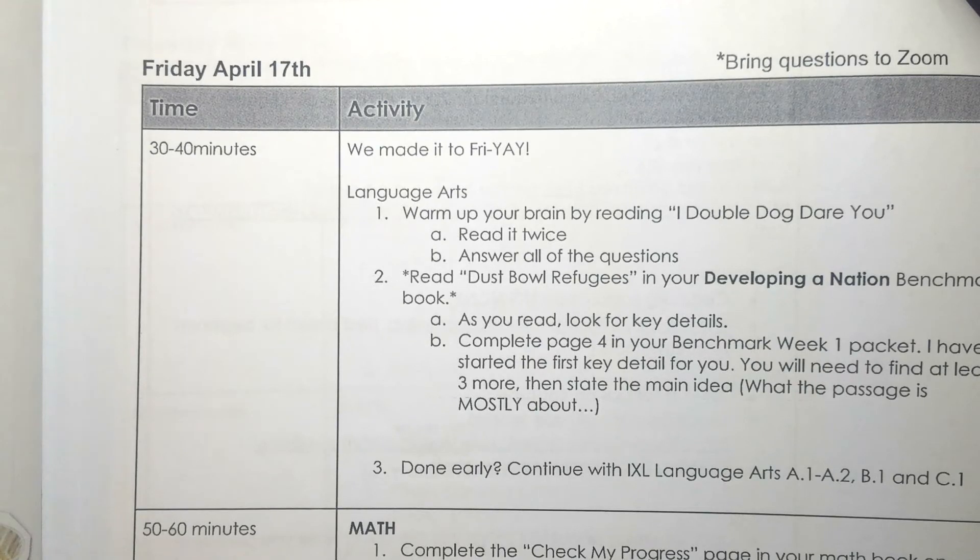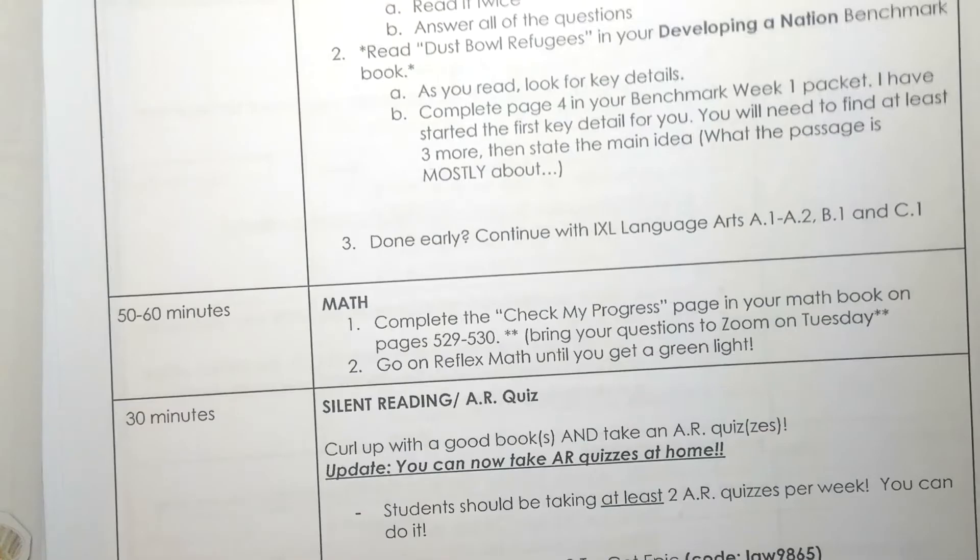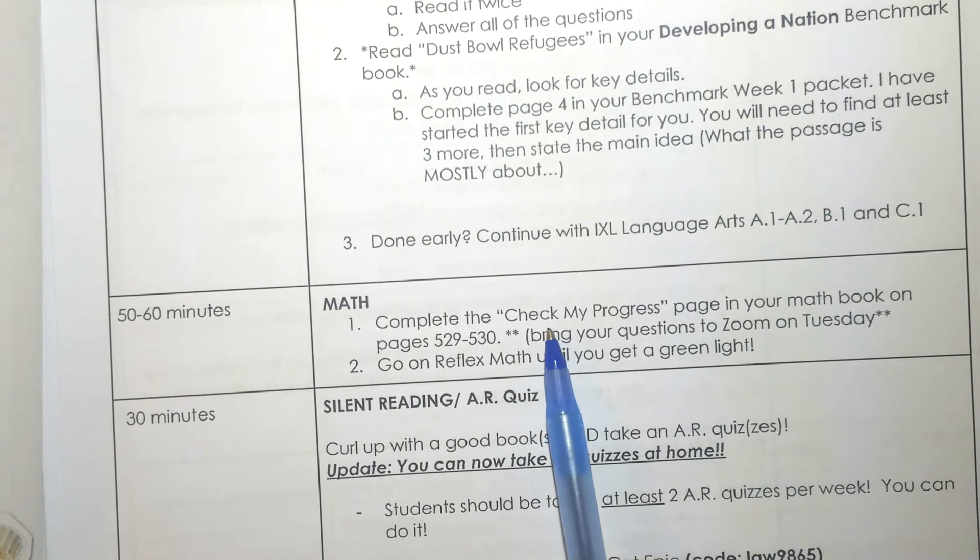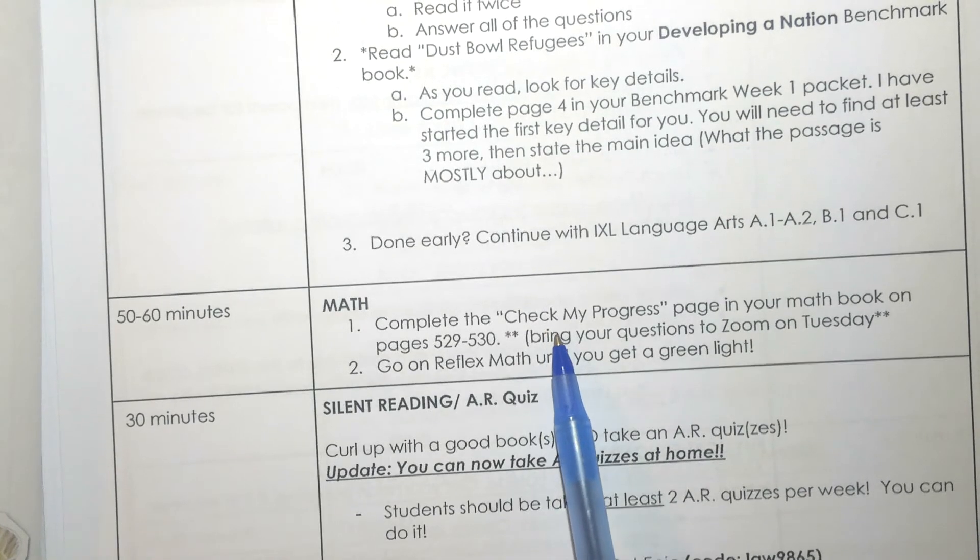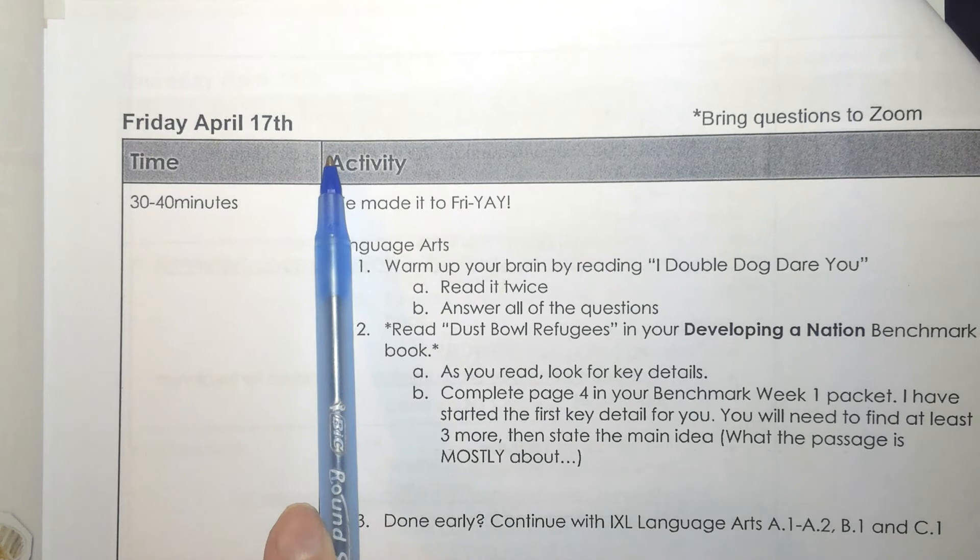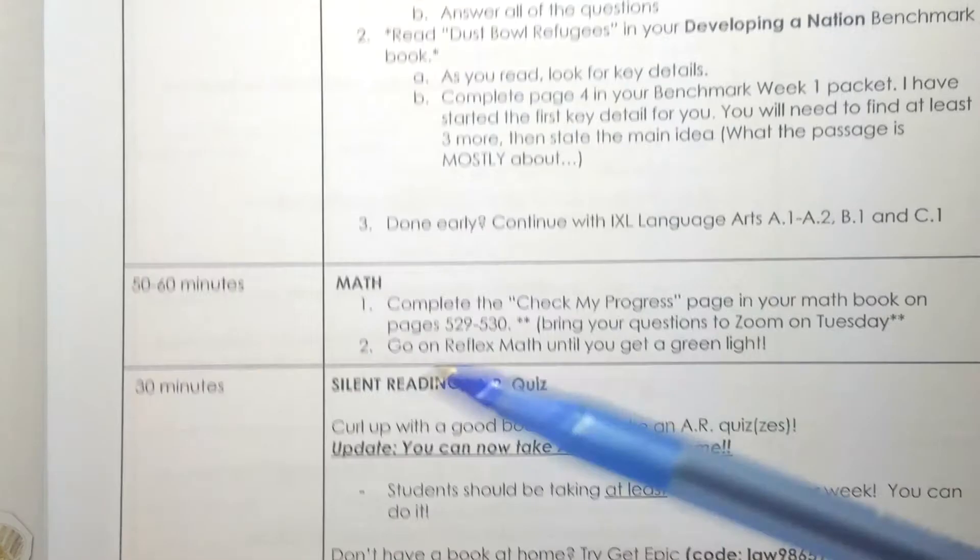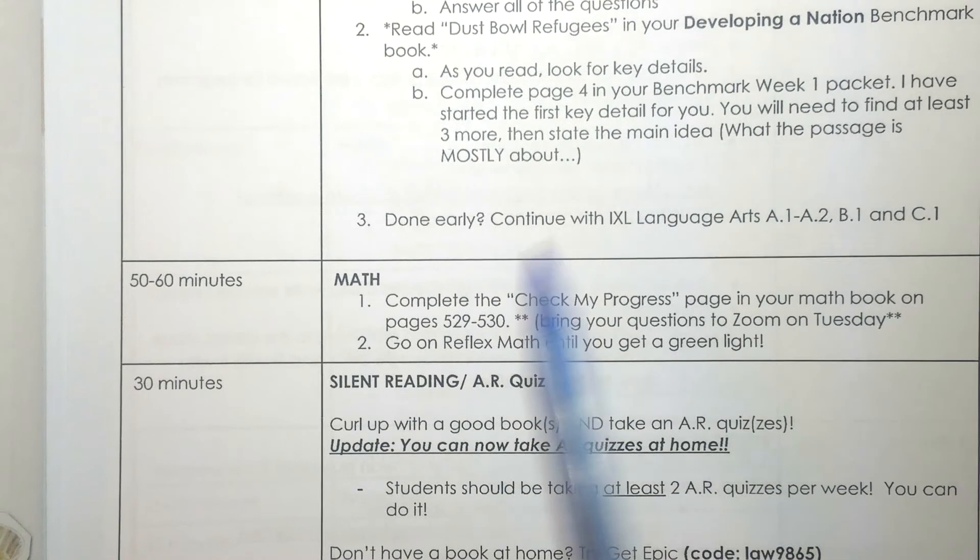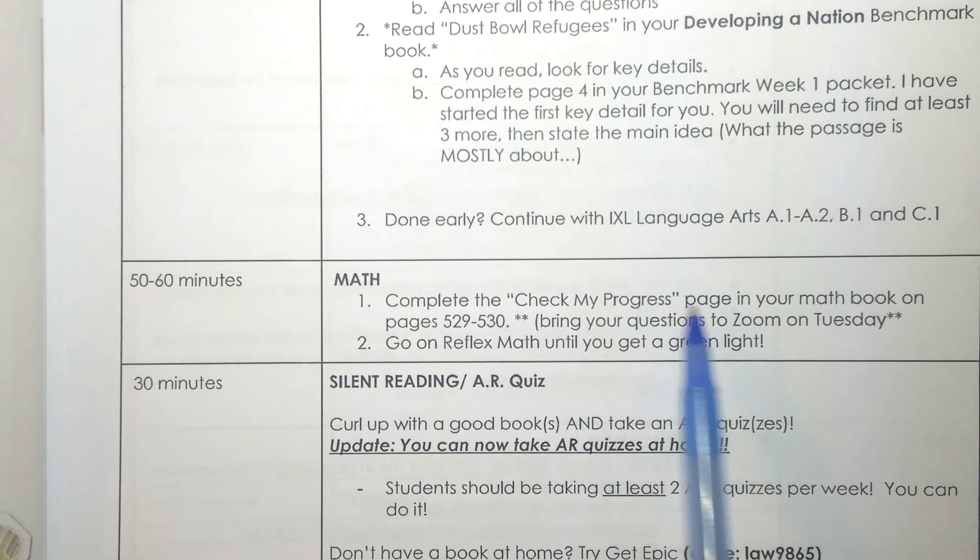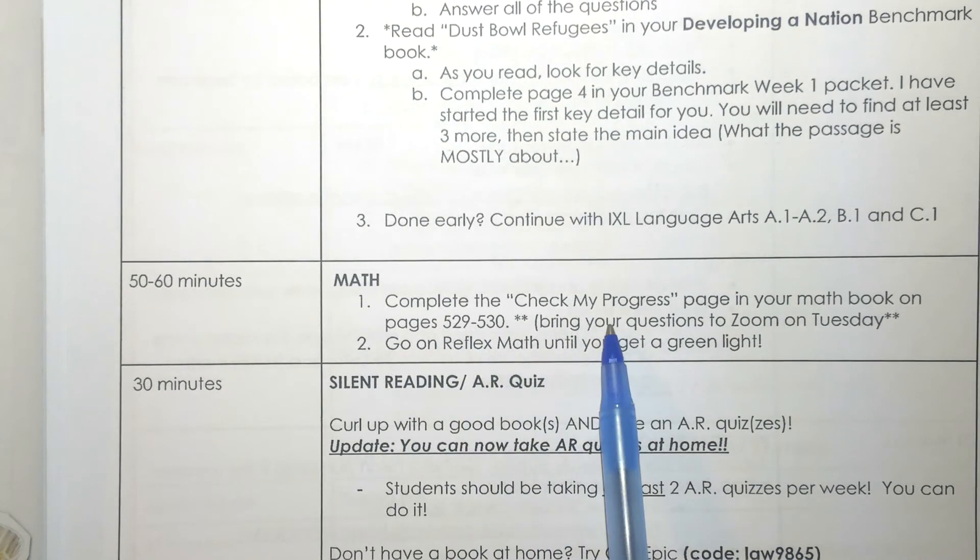Hello, fourth graders. Today is Friday, April 17th. I'm here to talk to you a little bit about your Check My Progress review in your math book. You can find all of this information in your weekly schedules packet on Friday, April 17th in the math section where it says complete the Check My Progress page in your math book on pages 529 to 530 and bring your questions to Zoom on Tuesday.